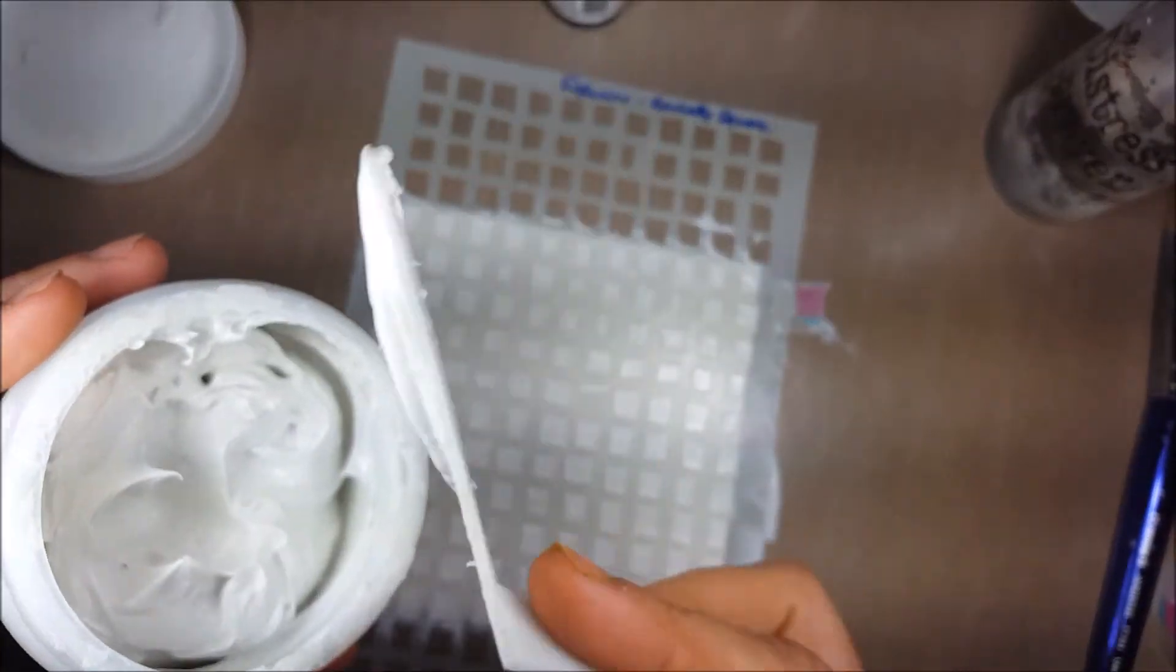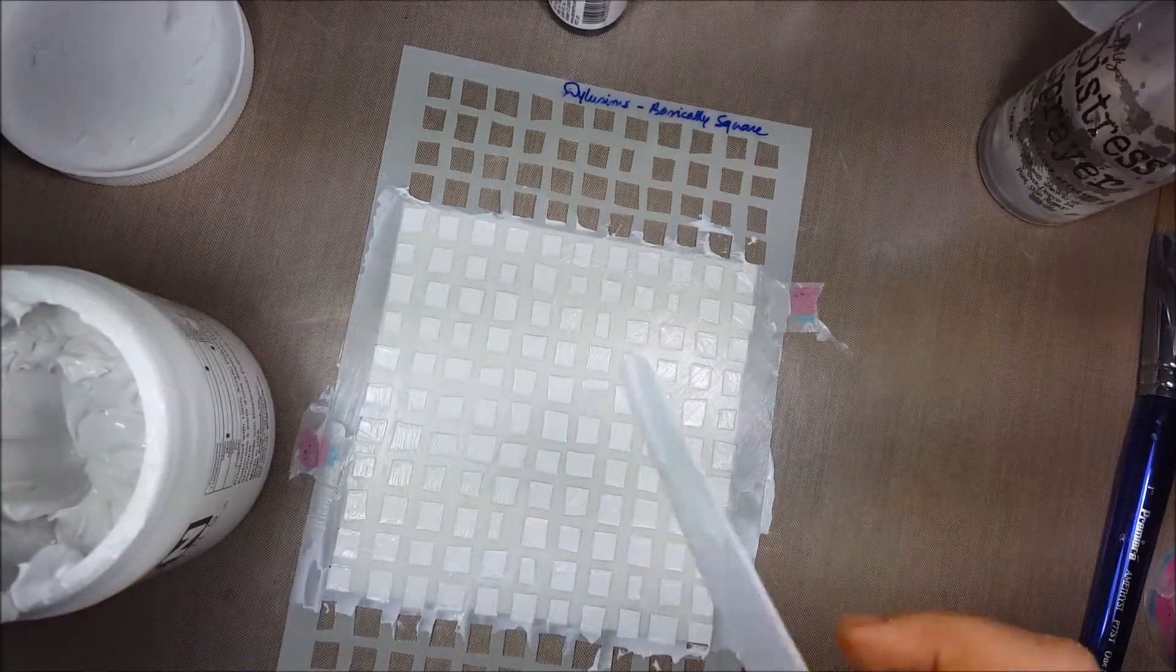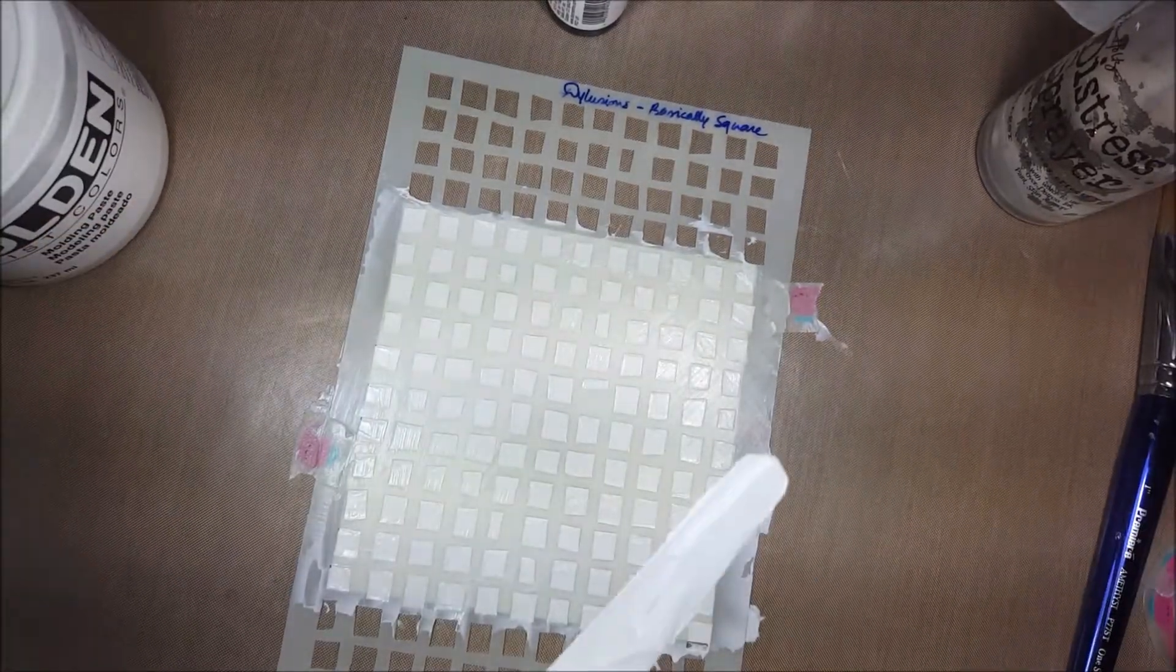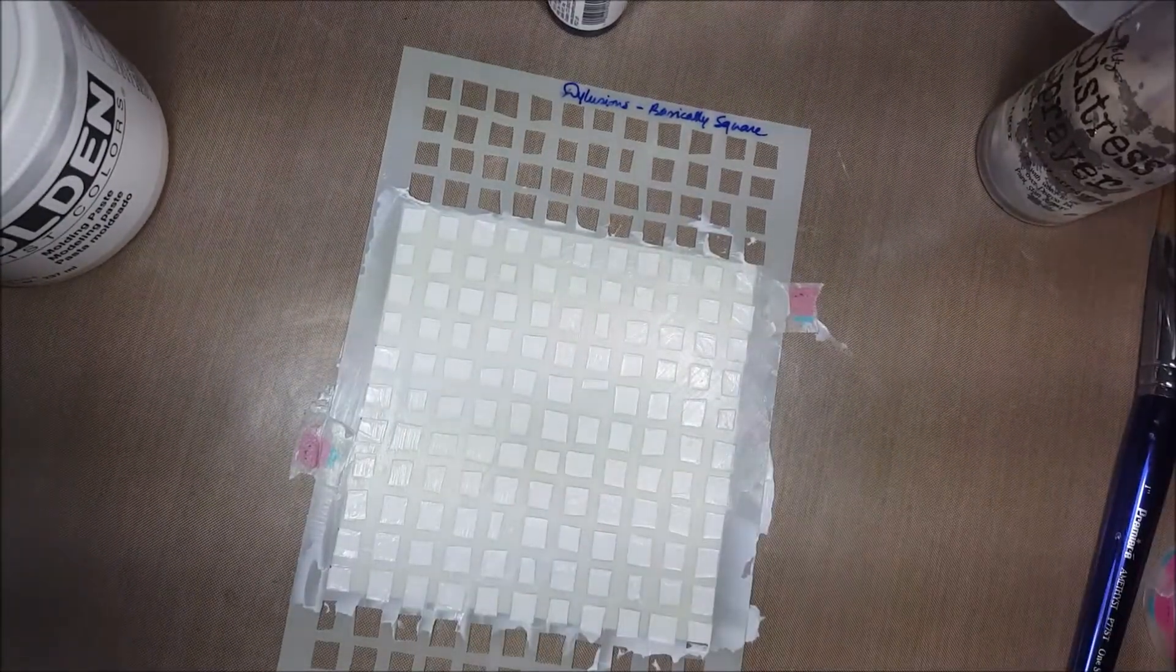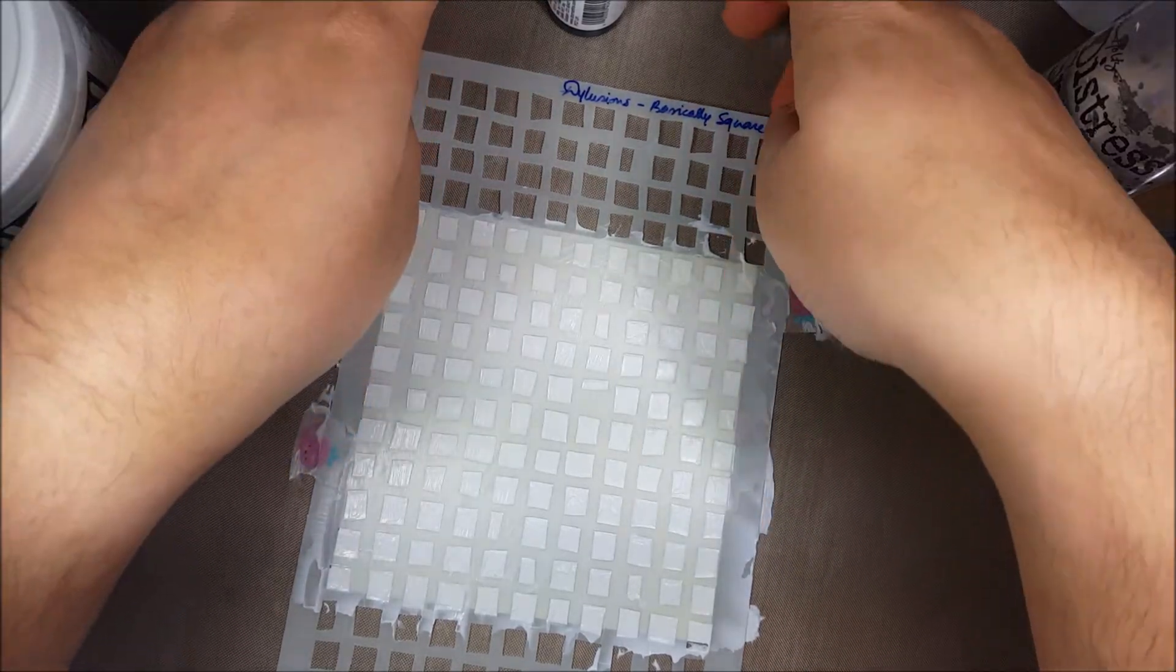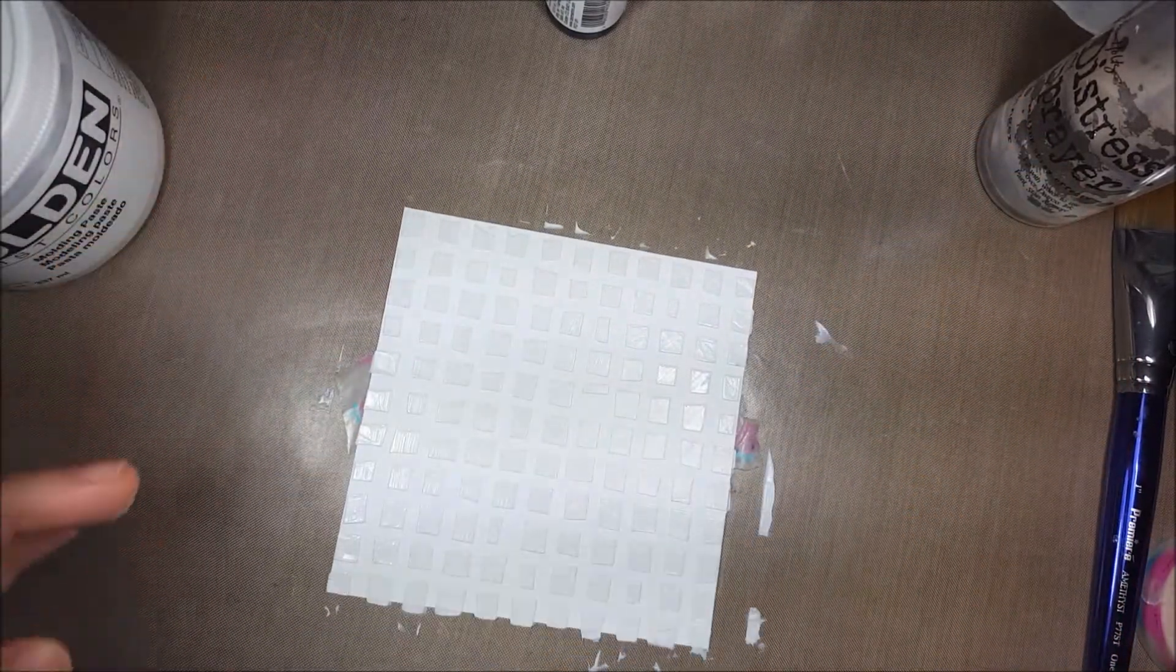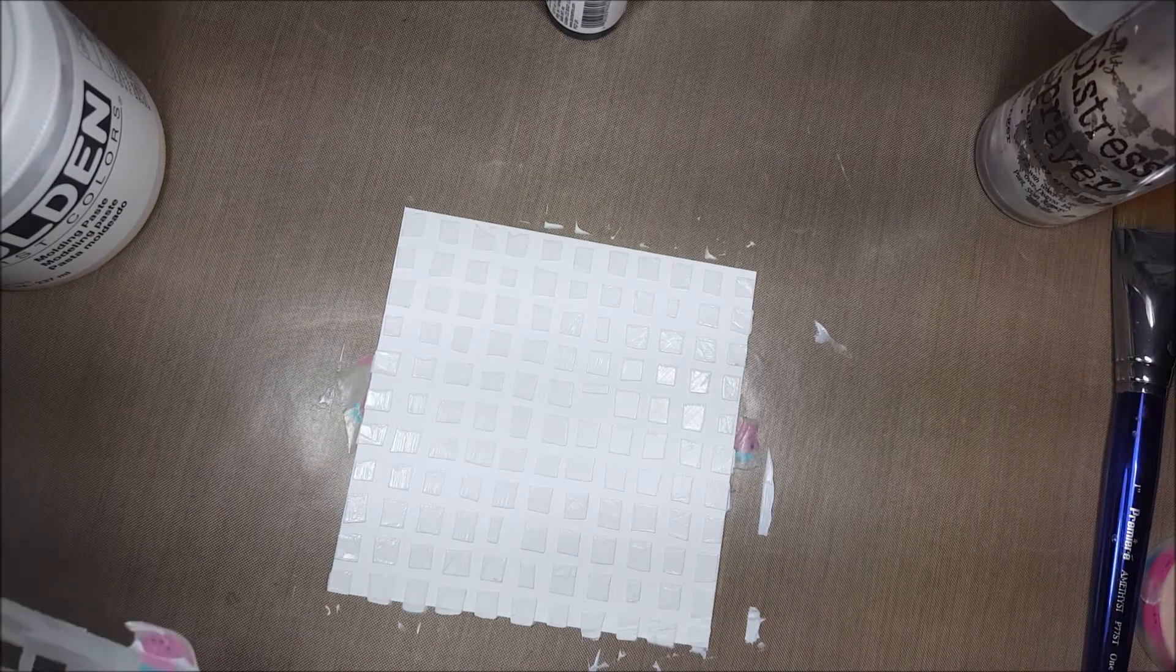It doesn't need a lot of modeling paste. You see I had taken a lot, but this is what I'm left with. I'm scraping it onto the bottle. You want to immediately wash off your stencil, but before doing that, I'm just going to clean my spatula with a paper towel. I'm going to peel off the stencil from the surface.